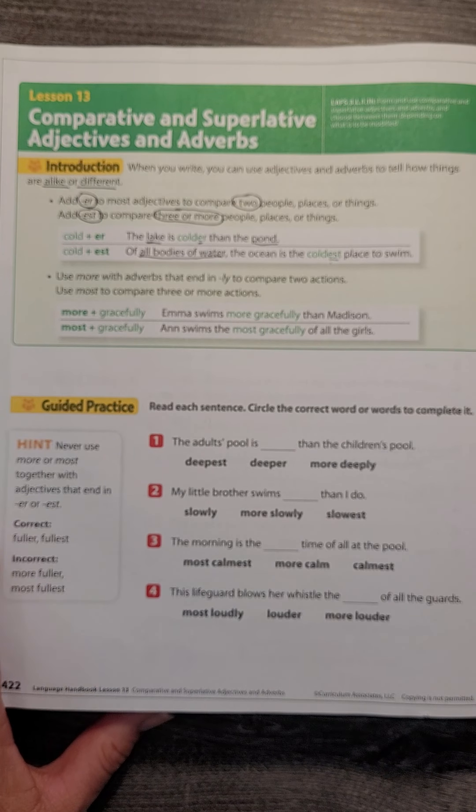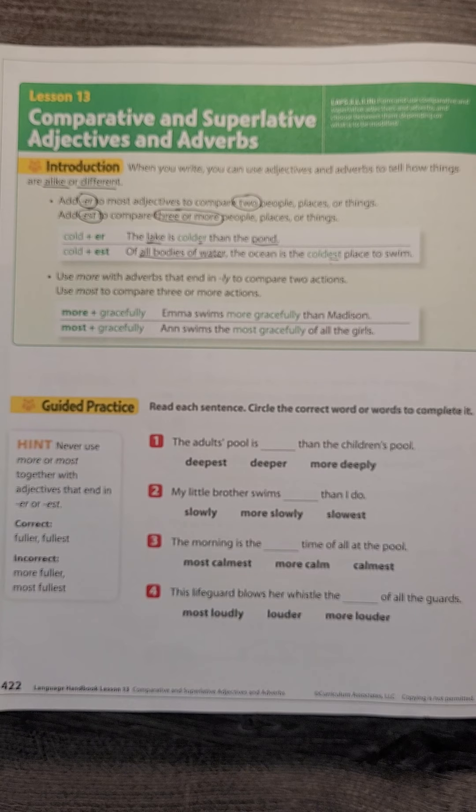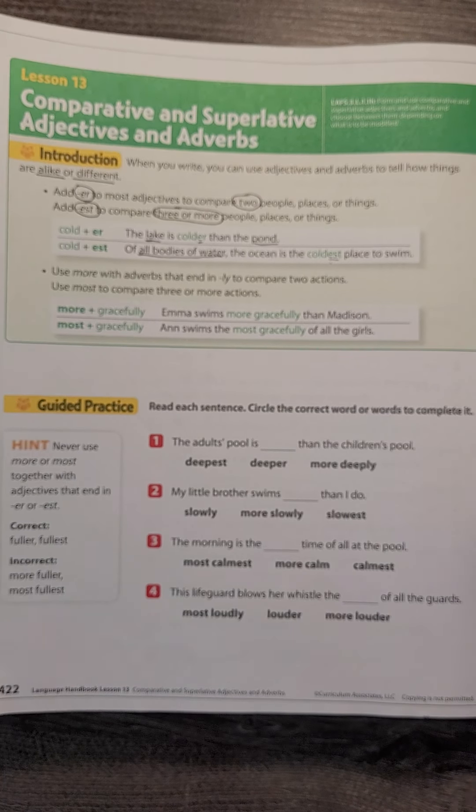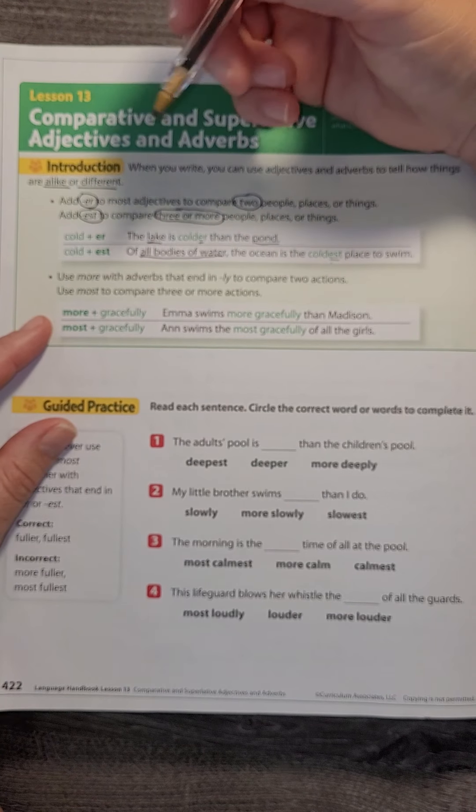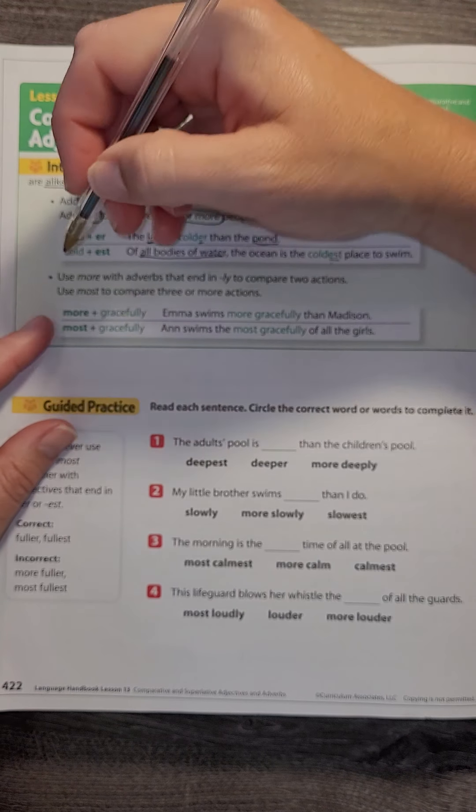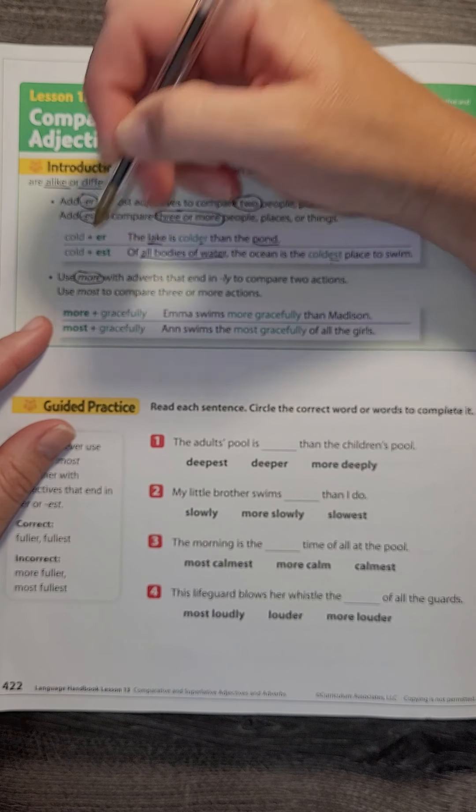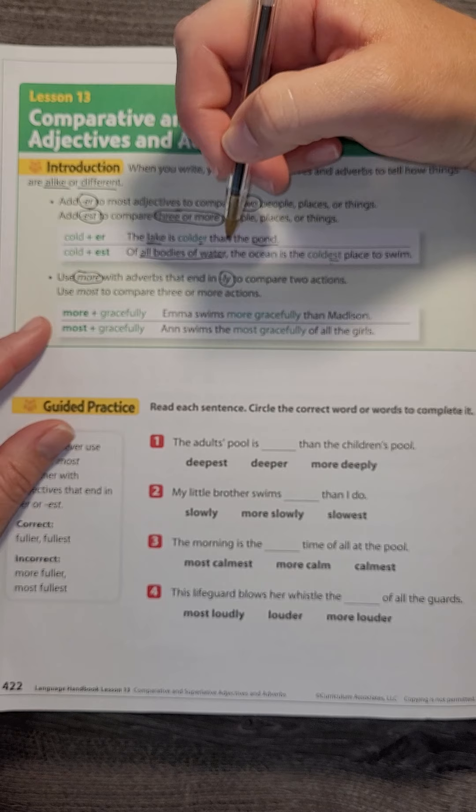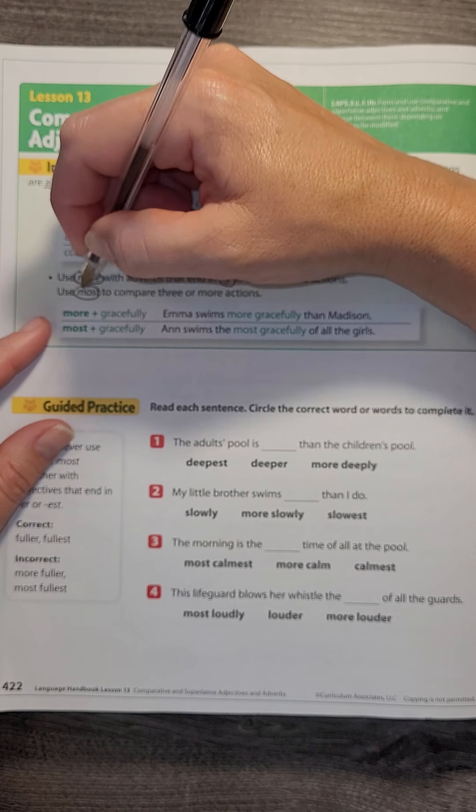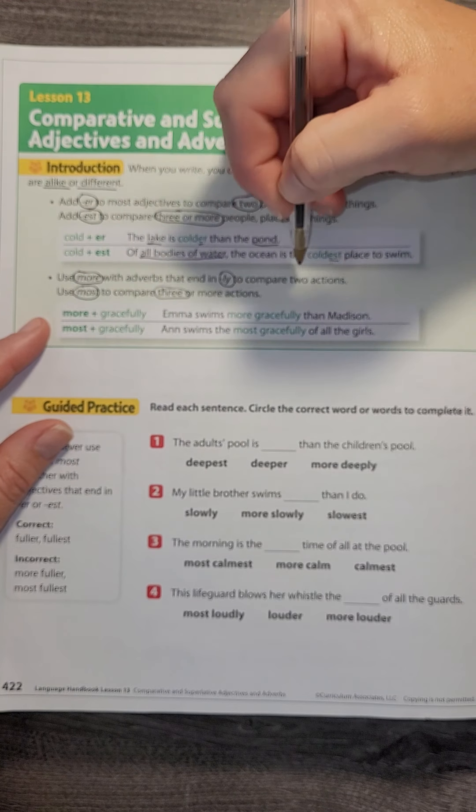Now adverbs describe verbs. Remember, they describe actions. So when we're comparing with adverbs, we use 'more' with our adverb that ends in -ly, and 'most' if it's three or more things.